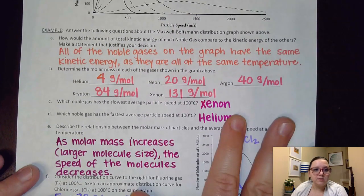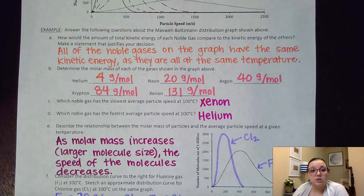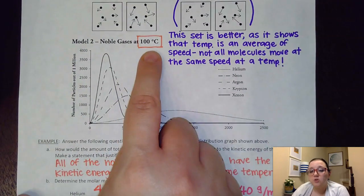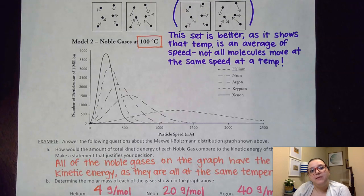So the first question on this one said how would the amount of total kinetic energy of each of the noble gases compared to the kinetic energy of the others? Make a statement that justifies your decision. Well, this one was kind of a trick question. If I notice back up here, it told us that they were all at 100 degrees Celsius. And if they are at the same temperature, then that means their kinetic energy should be the same.